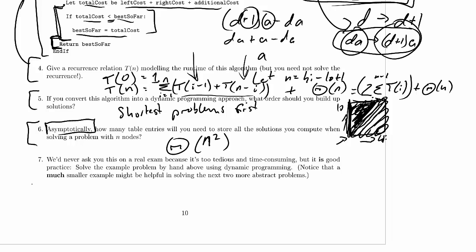Welcome to CS 320, 2014 Winter 2, Midterm 2 Practice Problem Screencast 6.7. This one opens with the delightful phrase: 'We'd never ask you this on a real exam because it's too tedious and time-consuming, but it is good practice.' Solve the example problem by hand using the above dynamic programming algorithm. Note that a much smaller example might be helpful in solving the next two more abstract problems.